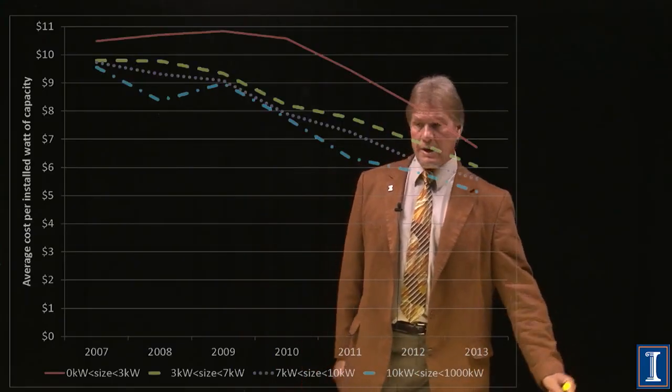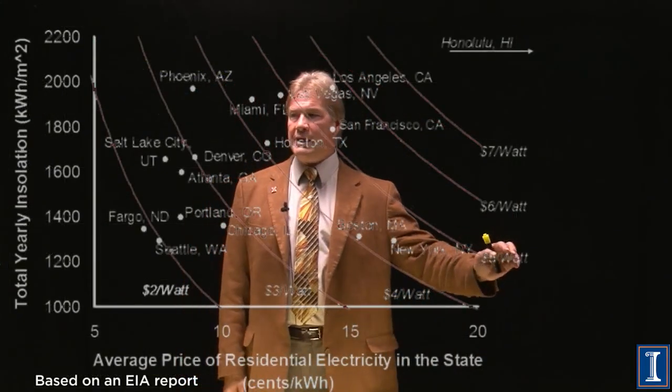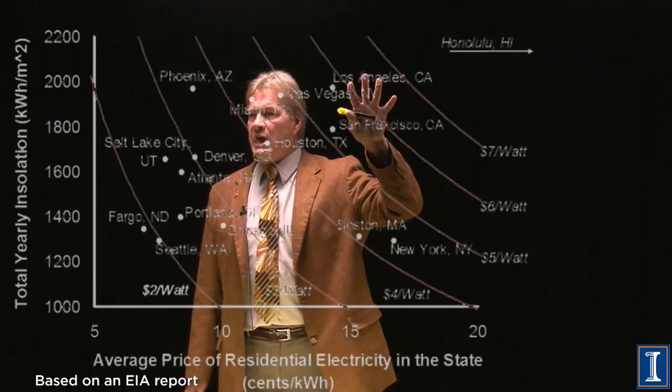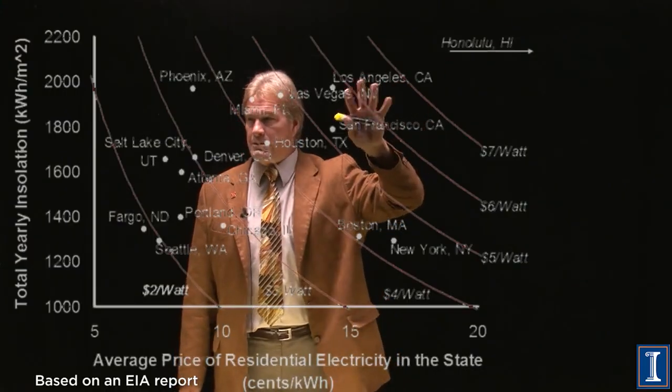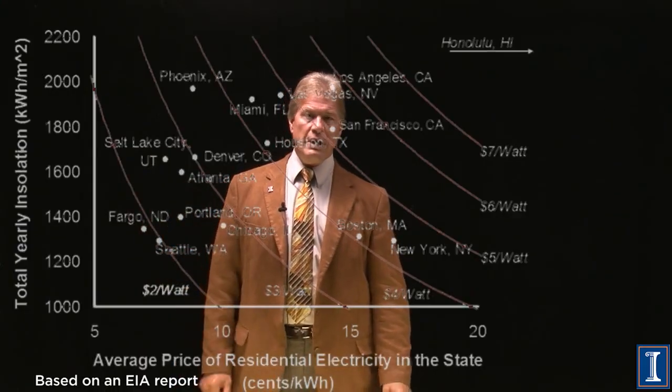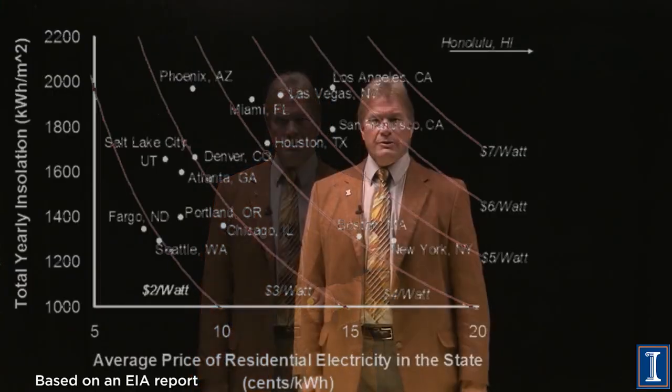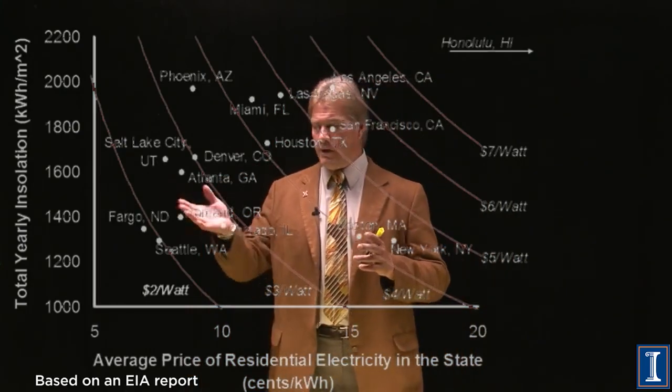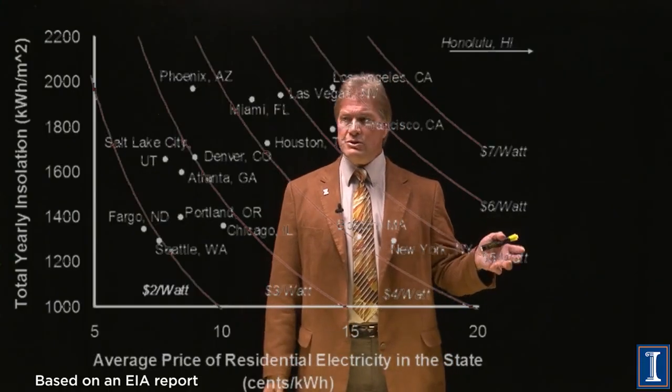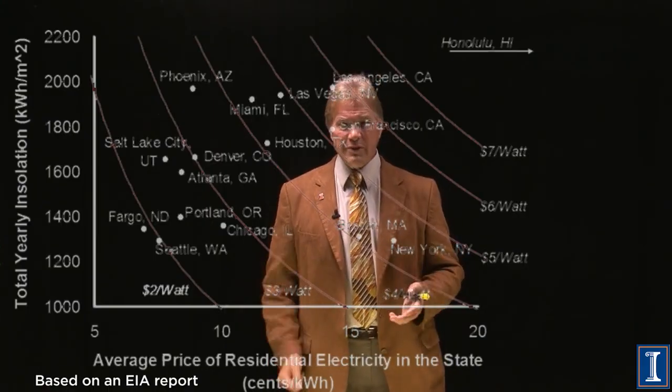So, let's go back a slide. We're at the five dollar per watt installed line, this one. LA, San Francisco, Las Vegas, Hawaii, make sense. Economically, Fargo, Seattle, Salt Lake, Denver, don't at five dollars per installed capacity. So, even though you can buy this stuff for under a dollar per peak watt for the panels, you can't install it in the United States for less than five. What's up with that?